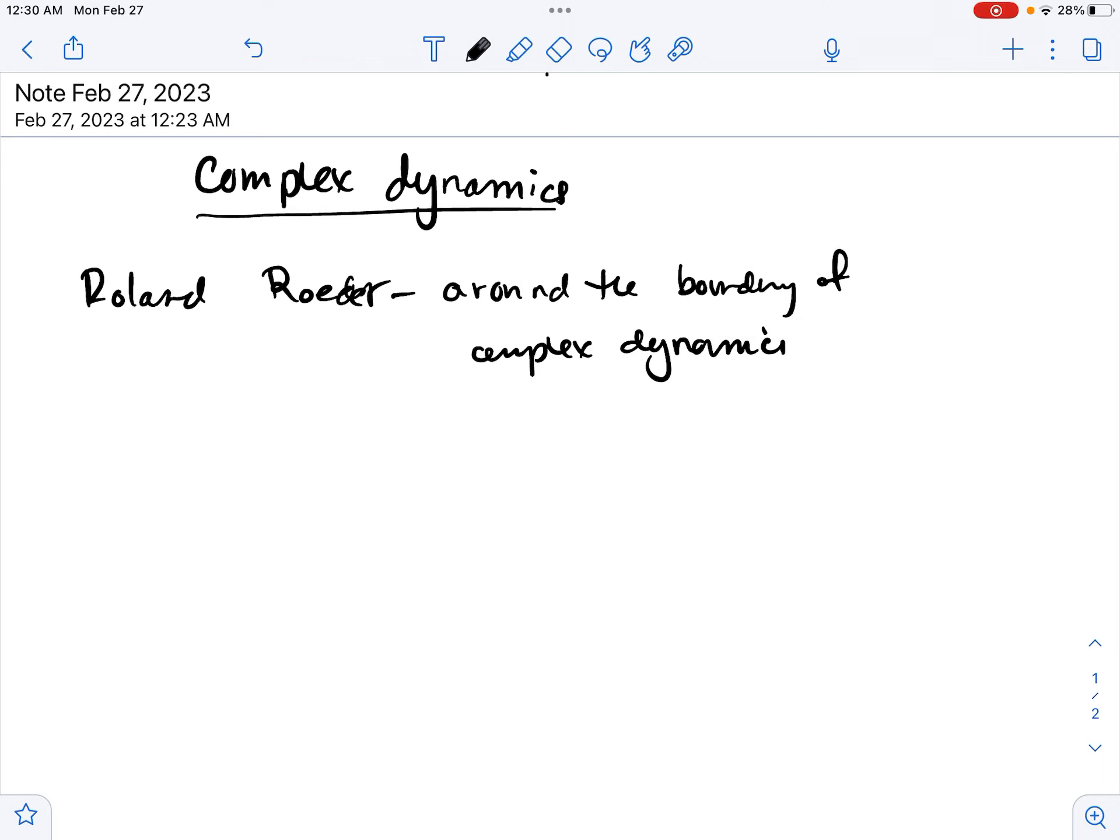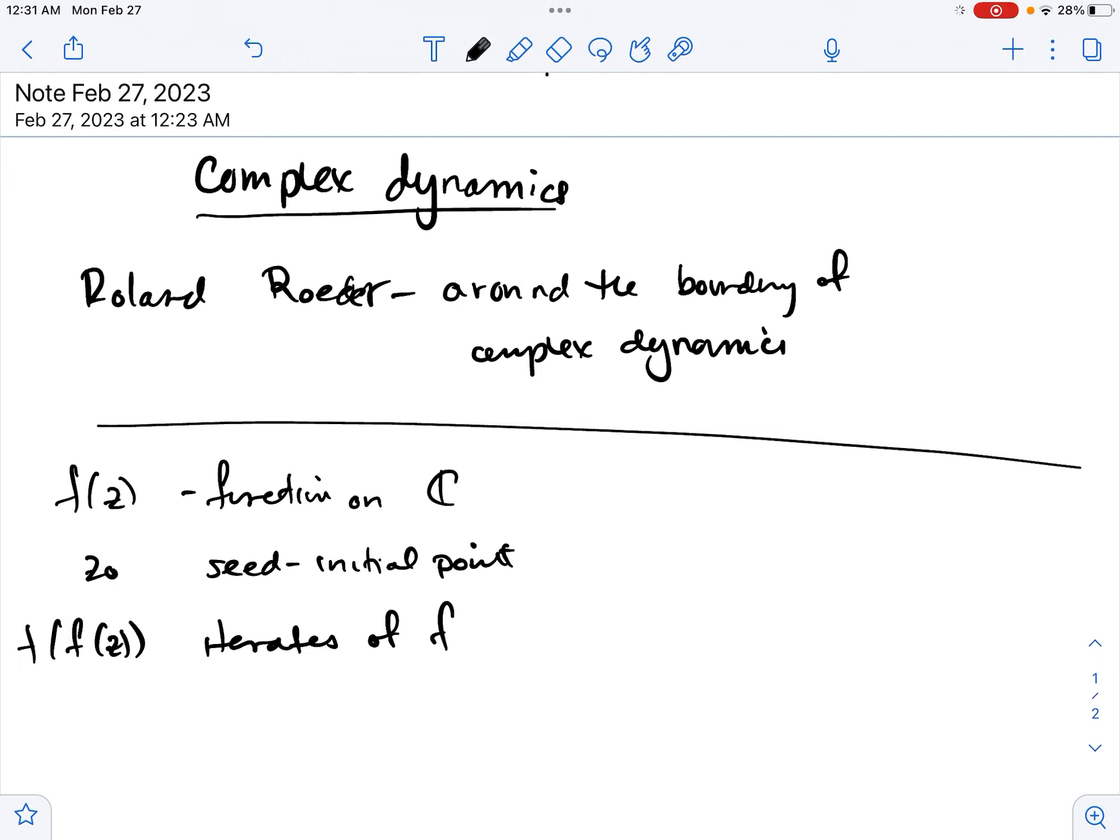The basic idea of complex dynamics is that we're going to start with some function f of z, some function on C, and then we're going to have some sort of seed or initial point, usually we'll call that z₀. And we're going to be looking at what are called the iterates of f. And those are things like f of f of z. So we're basically taking f and repeating it on itself. And what we're studying is the behavior of how this evolves as we move forward in time or with repeated application.